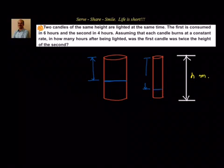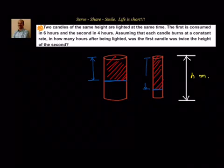This is the height remaining, and this much is what's gone in t hours for each candle. So we have to find out after how much time the first candle height will be twice the second candle height. This first height is twice the second height. Let me recap: two candles of the same height are lighted at the same time.